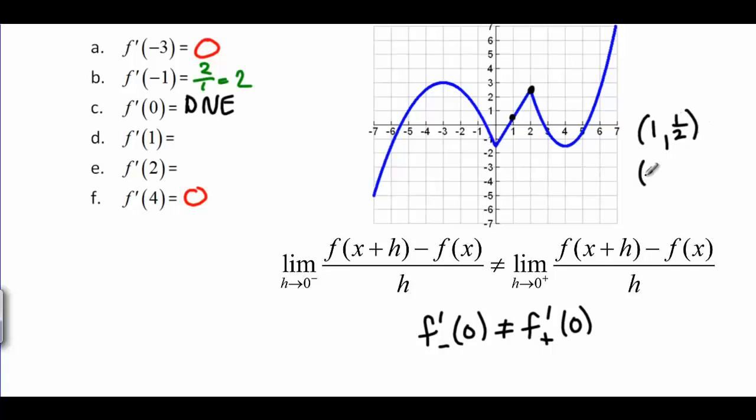And at 2, it looks like we're at the point 2, 2 and a half. That would make our change in y, 2, and our change in x, 1. So we get 2 over 1, which is 2.